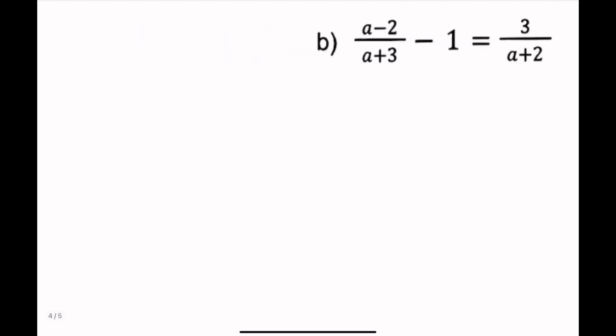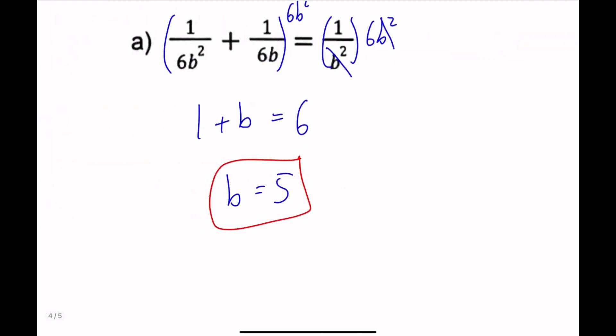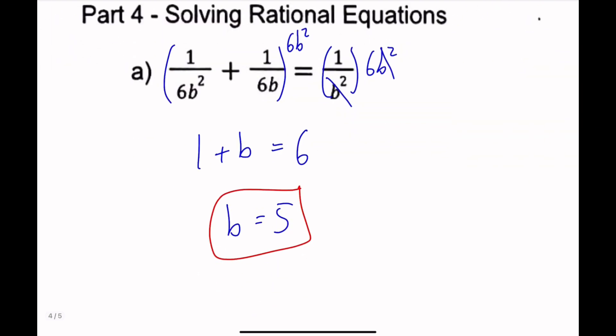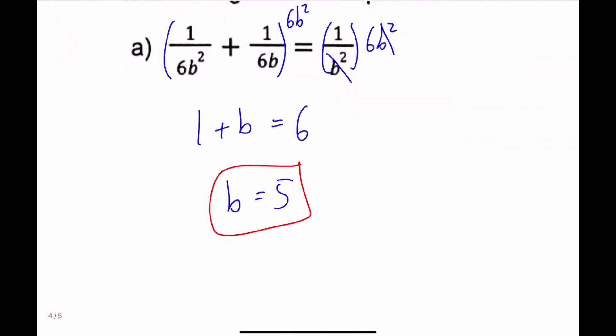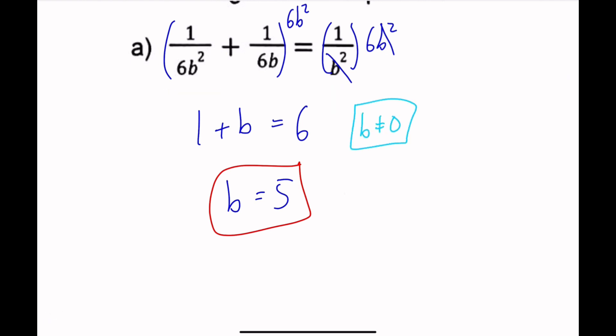And then for non-permissible values on this one, b cannot be 0, because b is in the denominator.